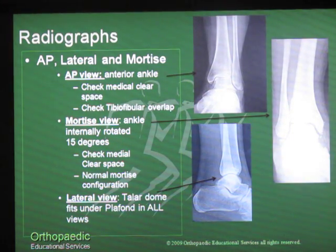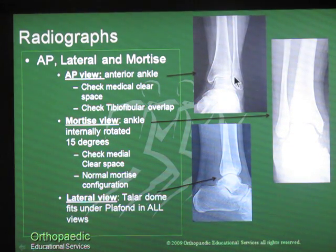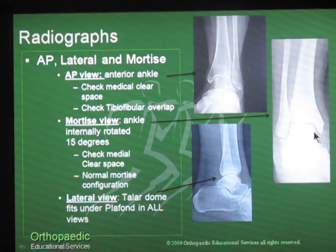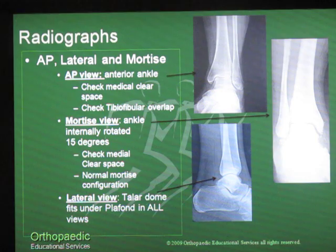For x-rays, I always get AP, lateral, and mortise views. The AP view shows the ankle mortise and the relationship of the talus to the tibial plafond. Always look at the medial clear space to make sure it's not wide — that can be an indication of injury to the syndesmosis or lateral malleolus. The mortise view is an internally rotated 15-degree view that shows a better profile of the talus and tibial plafond. On the lateral view, ensure the dome of the talus sits underneath the tibial plafond, as anterior excursion may indicate more severe injury than a simple sprain.